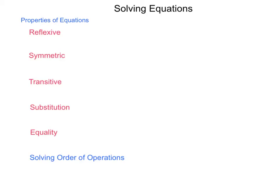In solving equations, there are a number of properties and rules that need to be followed in order to be successful in this endeavor. The first such property is called the reflexive property. What the reflexive property states is that an item is equal to itself.